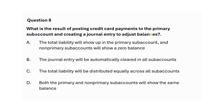What is the result of posting credit card payments to the primary subaccount and creating a journal entry to adjust balances? A. The total liability will show up in the primary subaccount and non-primary subaccounts will show a zero balance. B. The journal entry will be automatically cleared in all subaccounts. C. The total liability will be distributed equally across all subaccounts. D. Both the primary and non-primary subaccounts will show the same balance. Answer: Option A — The total liability will show up in the primary subaccount and non-primary subaccounts will show a zero balance.